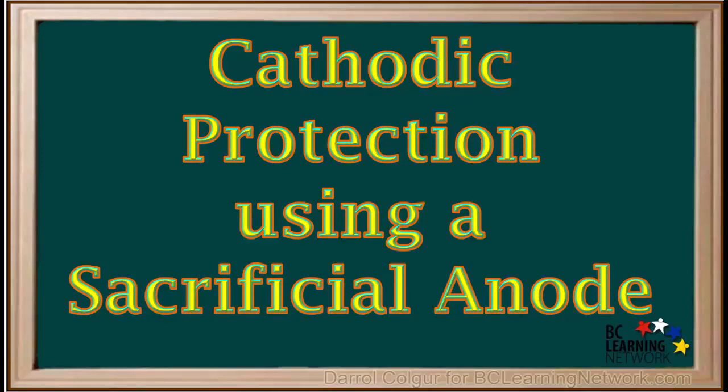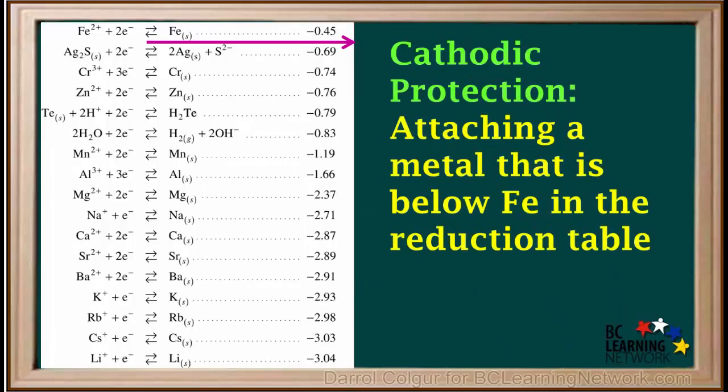Another method that is widely used to prevent corrosion of iron is called cathodic protection. This first type of cathodic protection we'll look at uses what is called the sacrificial anode. This type of cathodic protection is achieved by attaching a metal that is below iron in the reduction table to the iron or steel we're trying to protect.